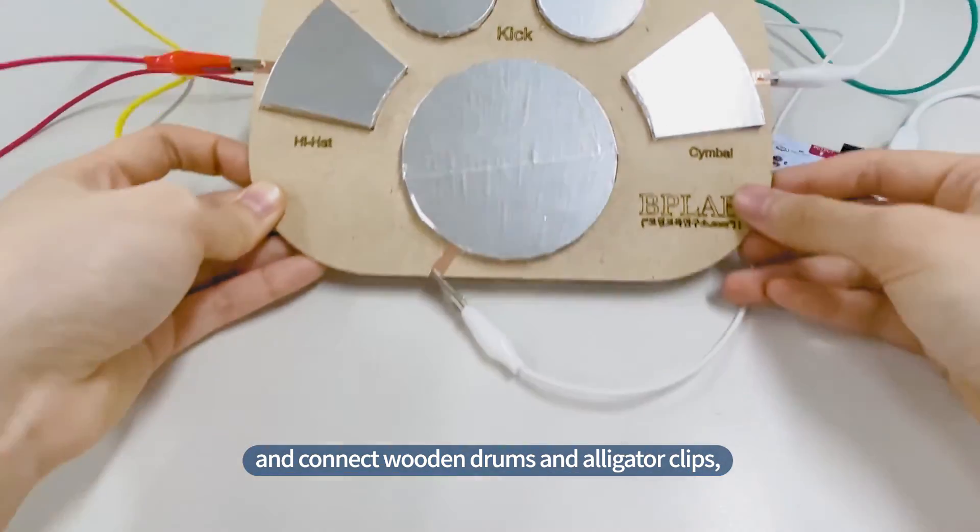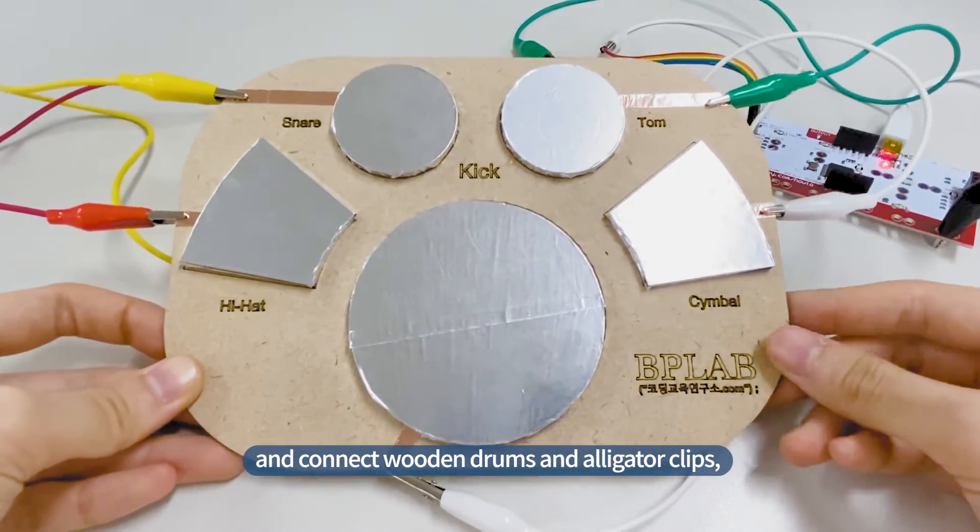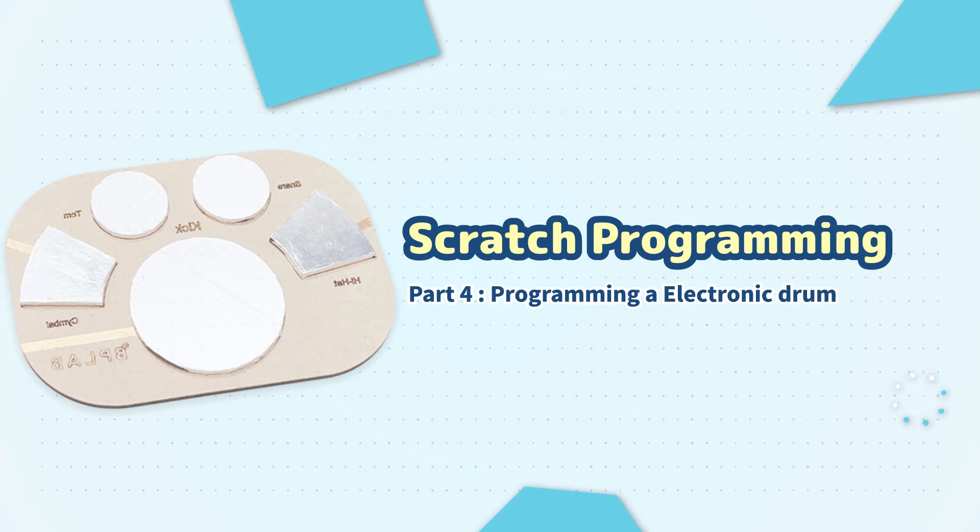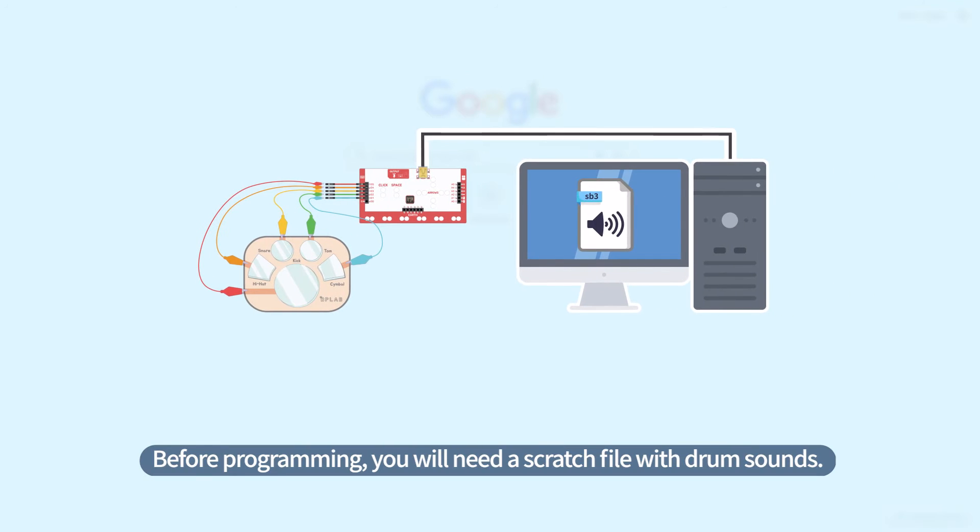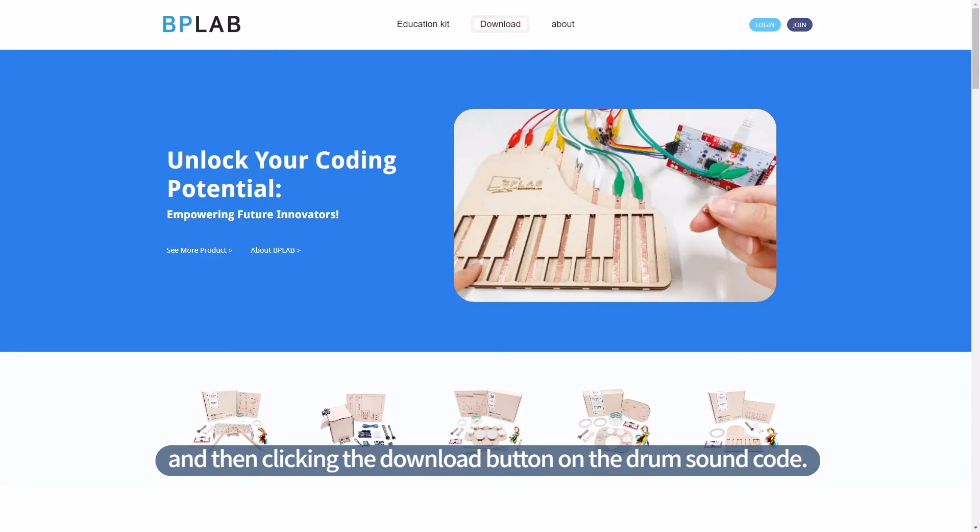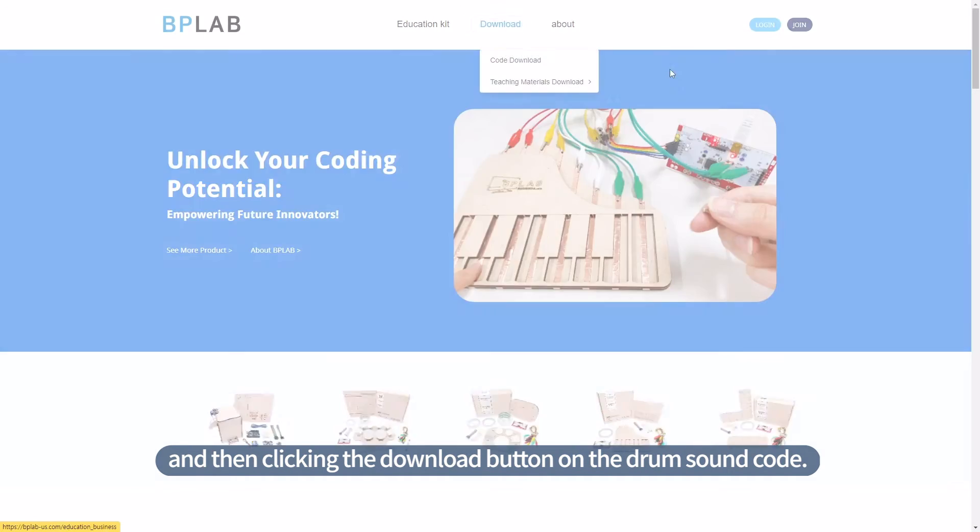Then, let's program the drum sound to match the touches. Before programming, you will need a scratch file with drum sounds. The file can be saved by accessing the website and then clicking the download button on the drum sound code.